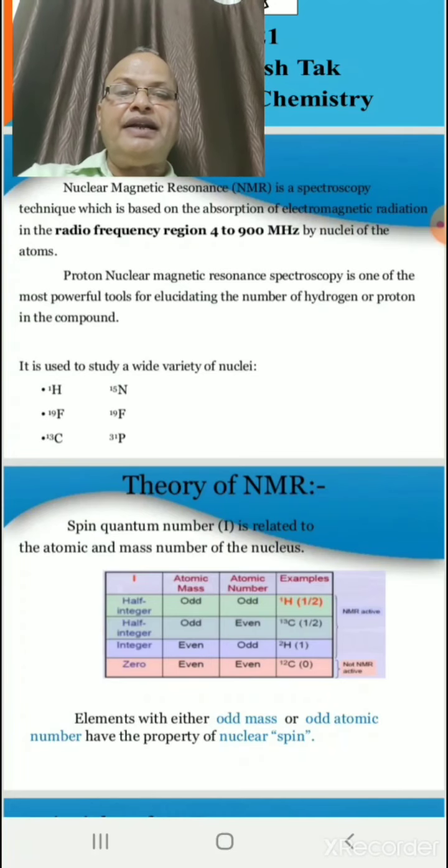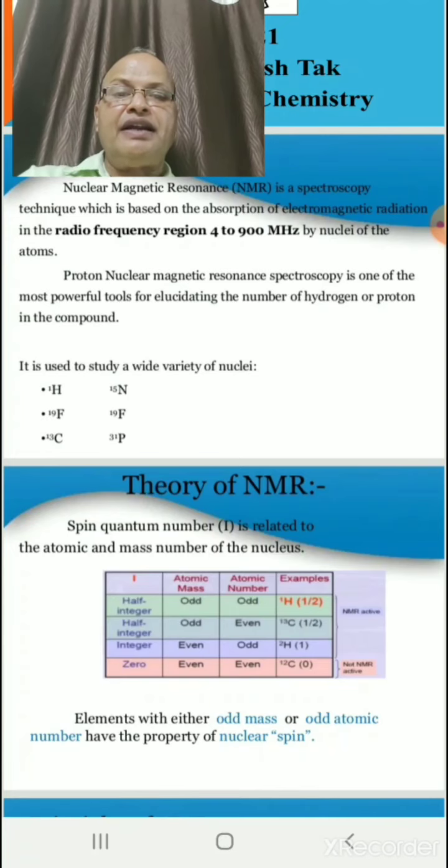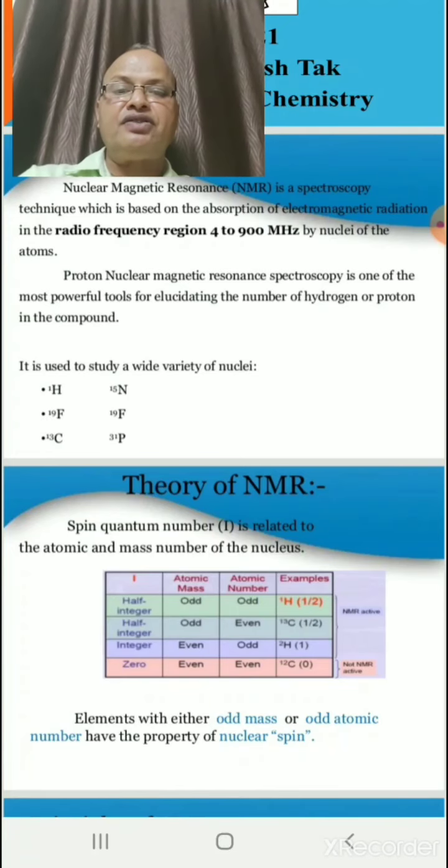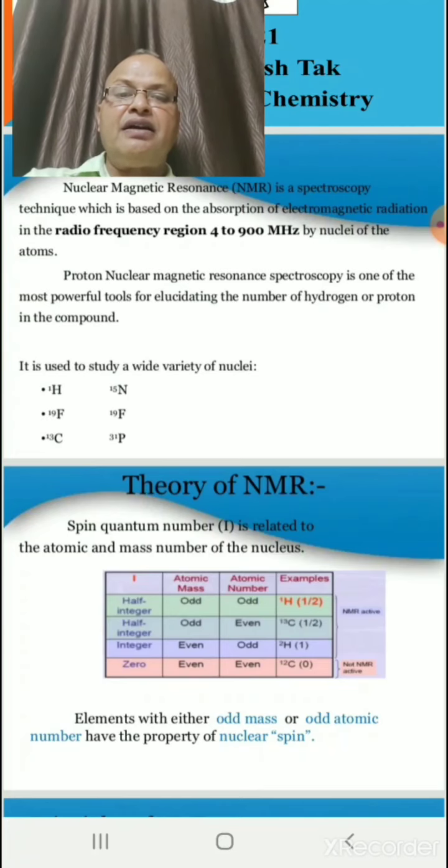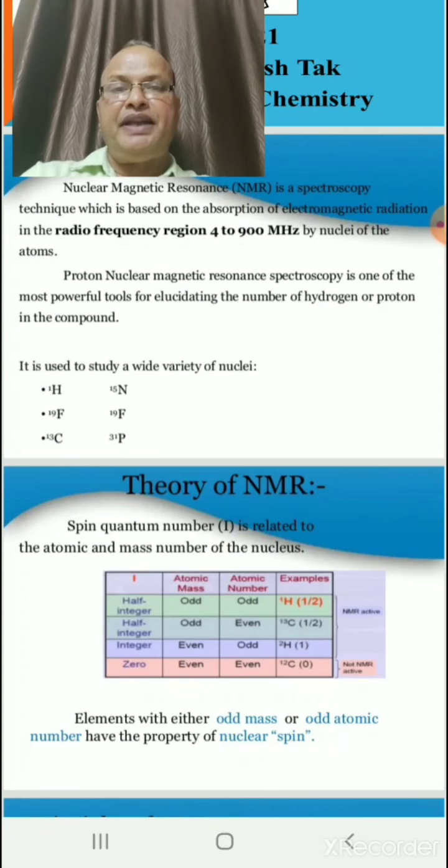The spin quantum number is related to the atomic and mass number of the nucleus. Elements which are either odd mass or odd atomic number have the property of nuclear spin.